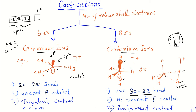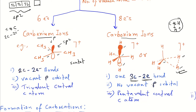The central carbon atom in carbonium ions is pentavalent. These are the structural features of carbenium and carbonium ions. Now we will move on to the formation of these ions.